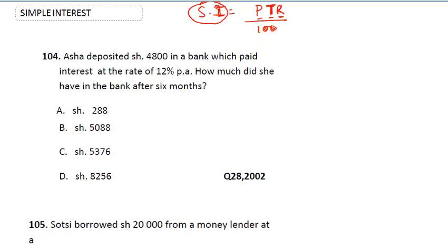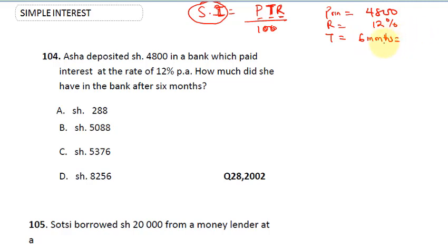Now we can solve this question. Asha deposited 4,800 in the bank which paid interest at the rate of 12% per annum. How much does she have in the bank after six months? From this question: the principal is 4,800, the rate is 12%, and the time is six months. Recall that time must be in years, so we convert six months to 0.5 years, since six months is half a year.